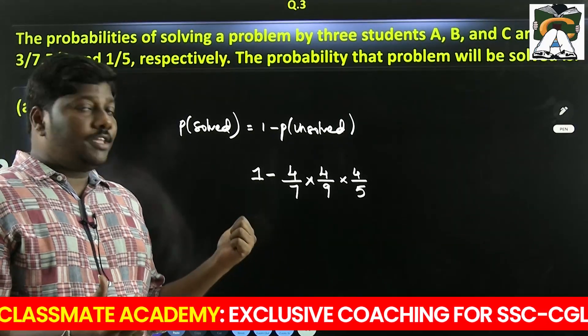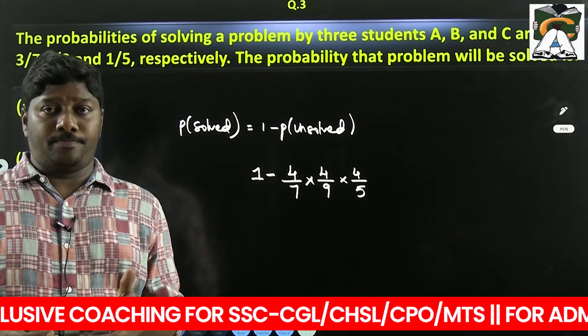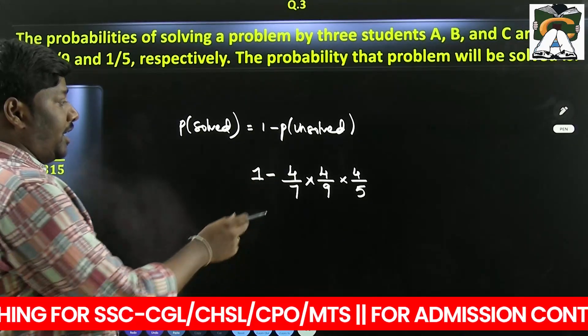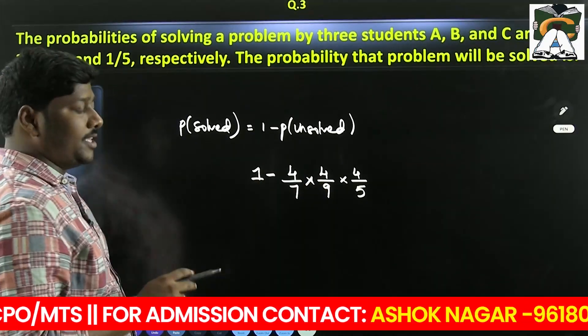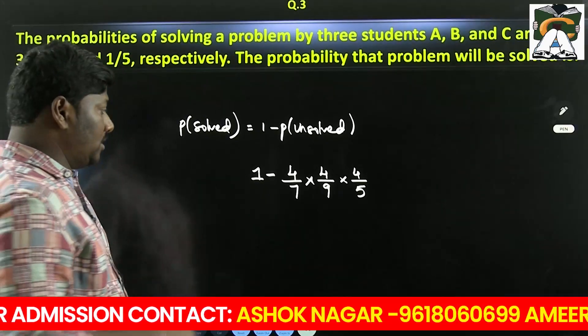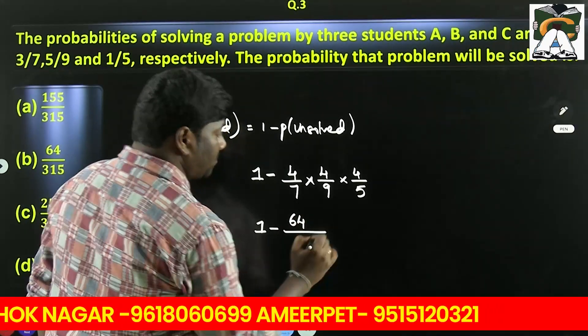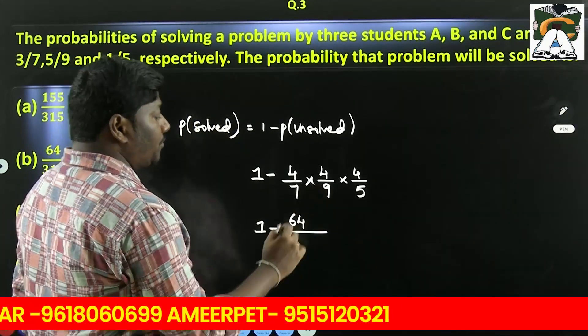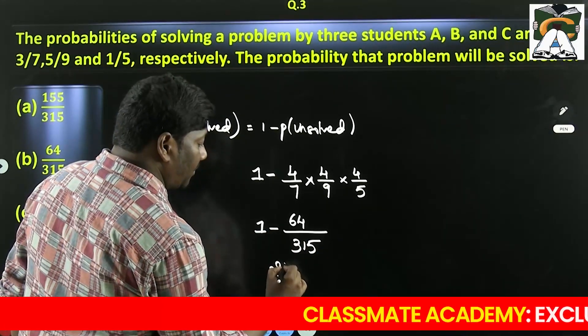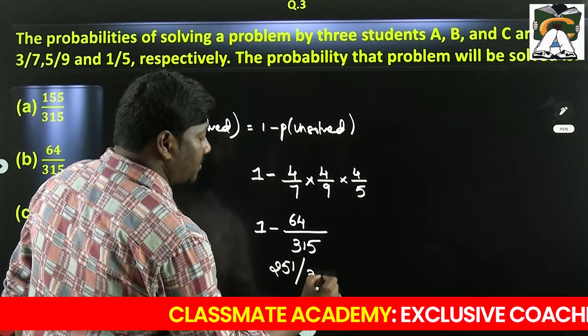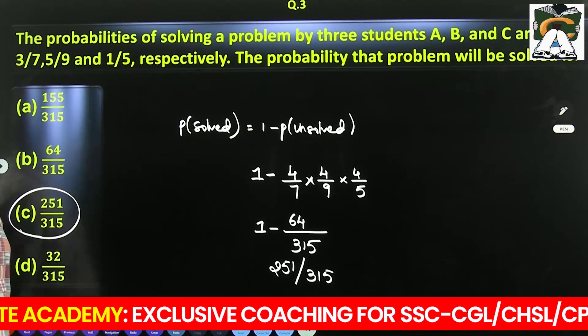A is not solving the problem, B is not solving the problem, C is not solving the problem. So 1 minus 4 cube is 64, 63 into 5 is 315, subtract, 251 divided by 315. So the answer is 251 divided by 315.